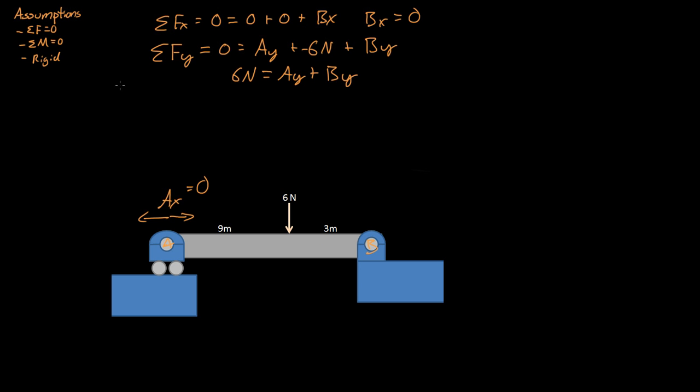Now, we need to use the summation of the moments to then find out what A and B are related to. So, the summation of the moments. We're going to do the moments around maybe this point. Summation of the moments must equal zero. So we have our six newton. We're going to call this force Q. So, the moment of Q plus the moment of A plus the moment of B.